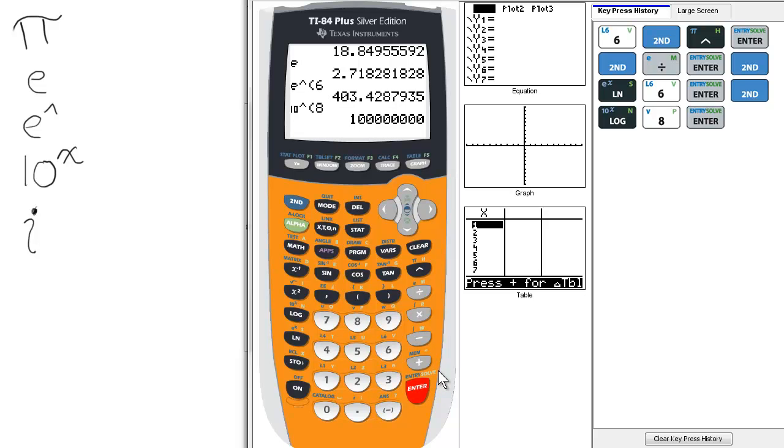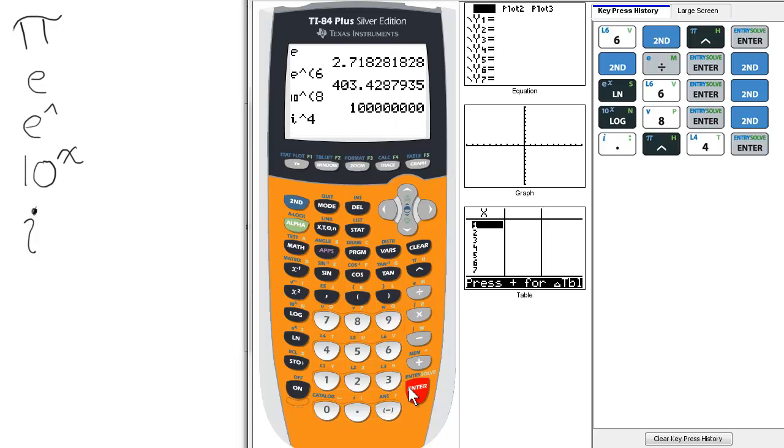Lastly, when using complex numbers, we may have to raise i to a certain power. So to select i, we press 2nd and the decimal key for i, and let's raise it to the 4th power. And there we have i to the 4th power.